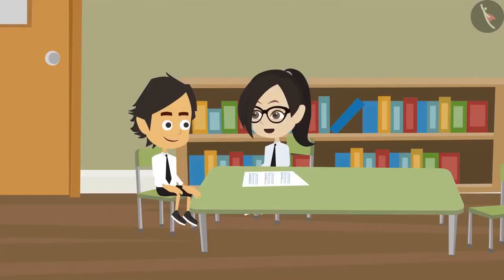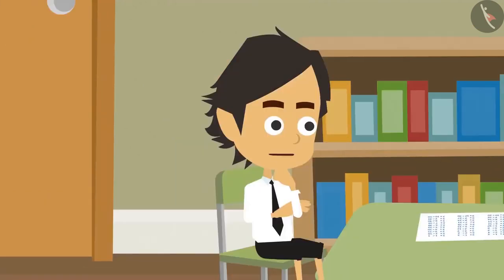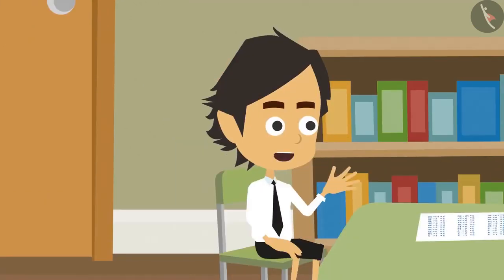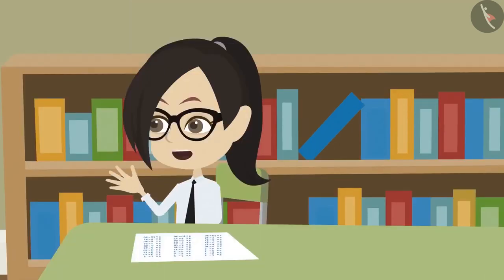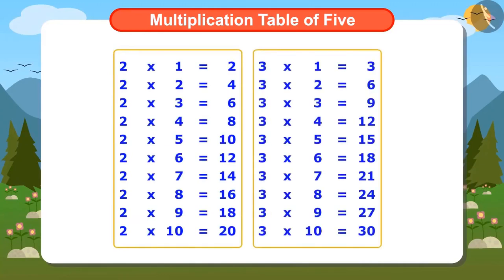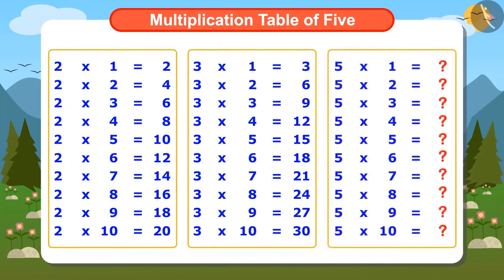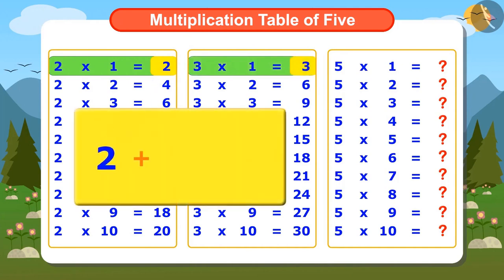But I use the multiplication tables of 2 and 3 to write the table of 5. This is the multiplication table of 2 and this is the multiplication table of 3. Now I will write the table of 5 using these. See, 2 multiplied by 1 is 2 and 3 multiplied by 1 is 3. Add 2 and 3, the answer is 5. So we write 5 multiplied by 1 is 5.